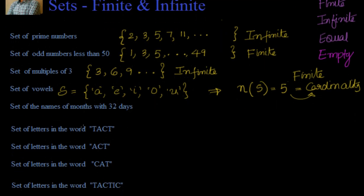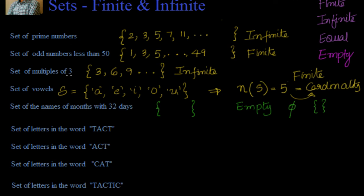Now let's look at the set of names of months with 32 days. We know there are no months with 32 days — that means no elements exist in this set. This is called an empty set. An empty set is a set which has no elements. It can be represented by the symbol phi (∅), or by empty curly braces { }, indicating there are no elements.